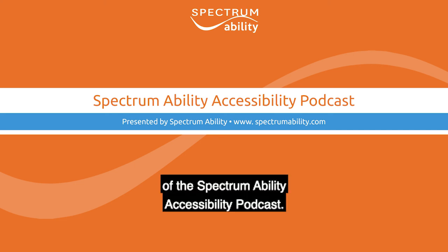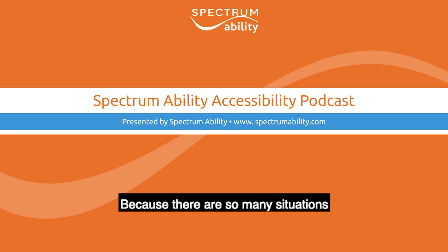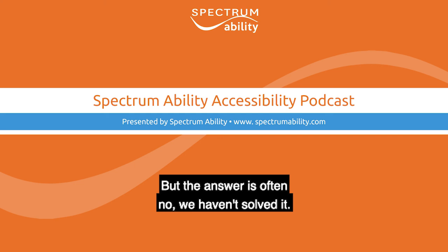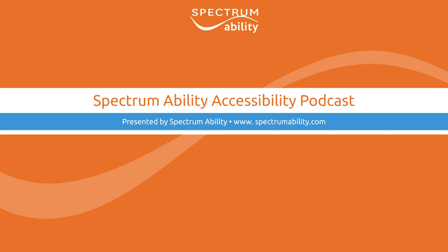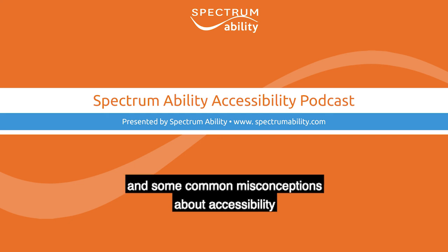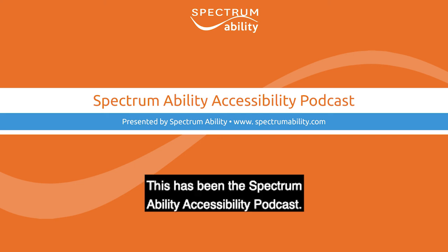That is Episode 1 of the Spectrum Ability Accessibility Podcast. I hope that was an adequate introduction to accessibility and why it's important. We'll keep talking about why it's important because there are so many situations where you'd think we'd have solved it by now — but often the answer is no. In the next episode, we're going to talk about what accessibility entails, some common misconceptions, and a couple more things to blow your mind. Until next time, this is Arnold from Vancouver. Stay accessible.